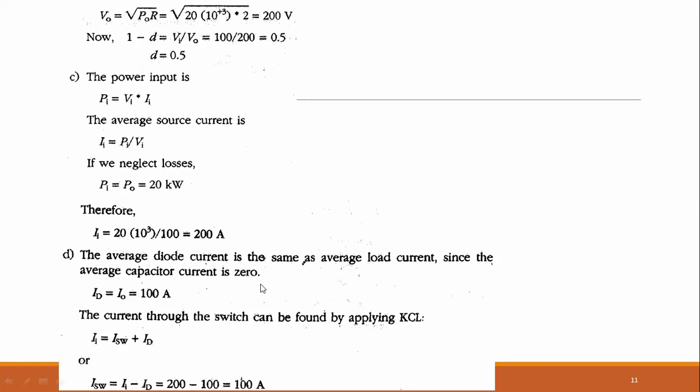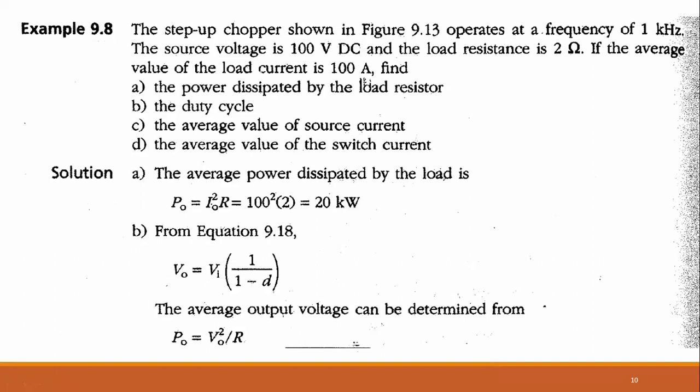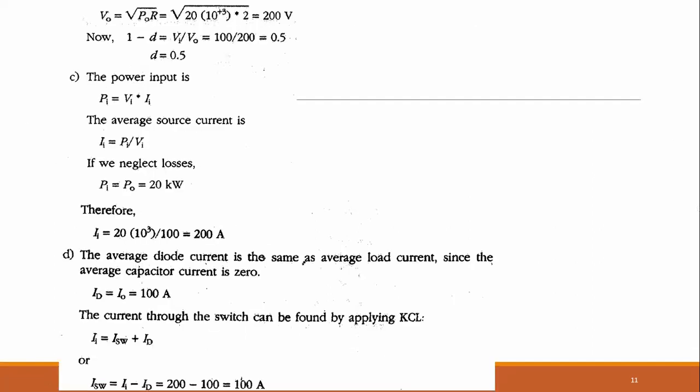With D = 0.5, the switch is on for half the period and off for the other half. Assuming ideal converter with negligible losses — switching devices are semiconductors with near-zero loss, and the inductor and capacitor are storage elements with zero power dissipation — input power equals output power = 20 kilowatts. Input current equals P_in / V_in = 20,000 / 100 = 200 ampere.